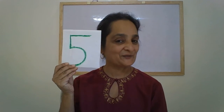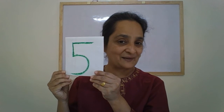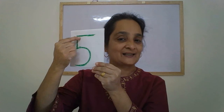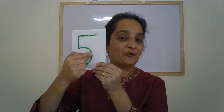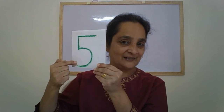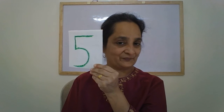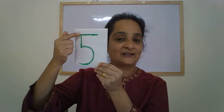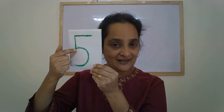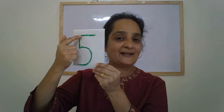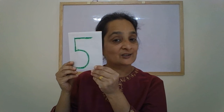Number 5. How can we recognize this number? We recognize it with a standing line, a forward curve and a sleeping line on top. Number 5 is recognized with a standing line, a forward curve and a sleeping line on top.